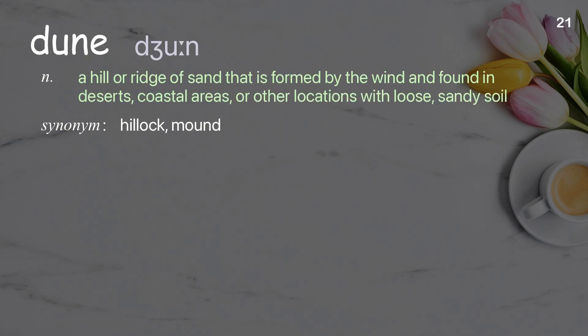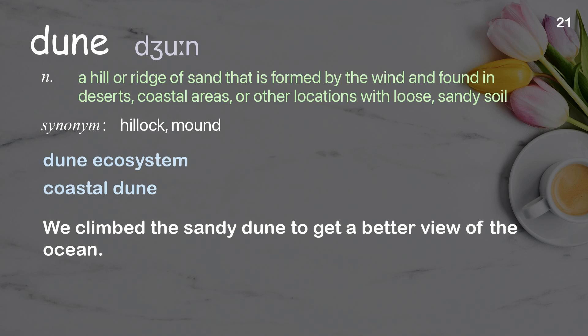Dune: A hill or ridge of sand that is formed by the wind and found in deserts, coastal areas, or other locations with loose, sandy soil. Examples: Dune ecosystem. Coastal dune. We climbed the sandy dune to get a better view of the ocean.